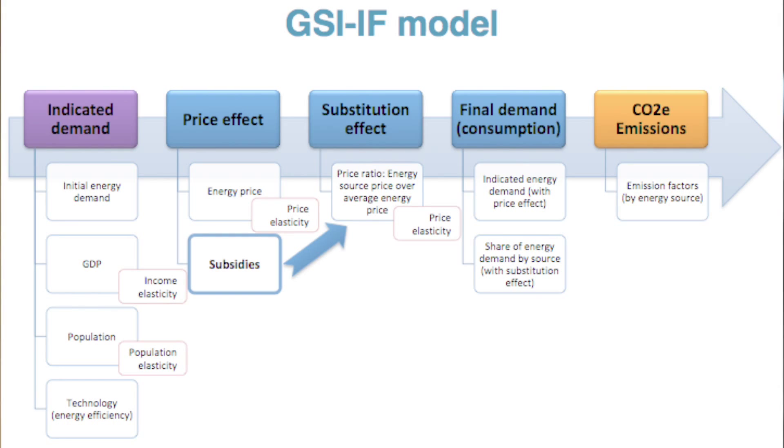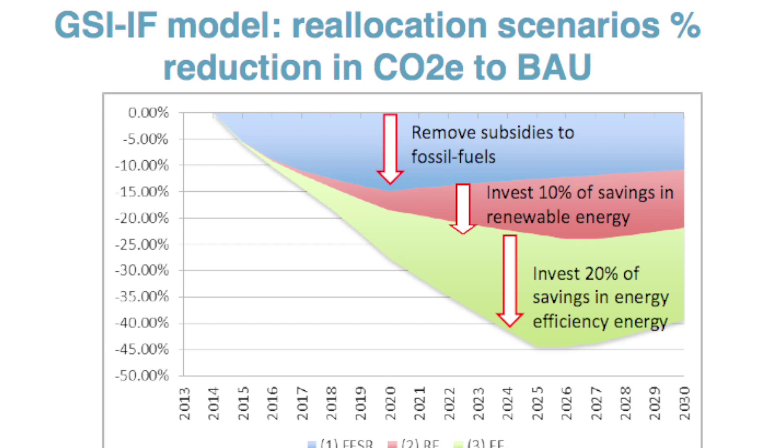We looked at 20 countries with the GSIF model. On average, from fossil fuel subsidy removal alone, we get around 10% emissions reductions by 2020, which is good. Obviously it varies for different countries, but this figure can be increased — emissions reductions can go down further if we use some of the savings from subsidy reform: 10% into renewables and 20% into energy efficiency.